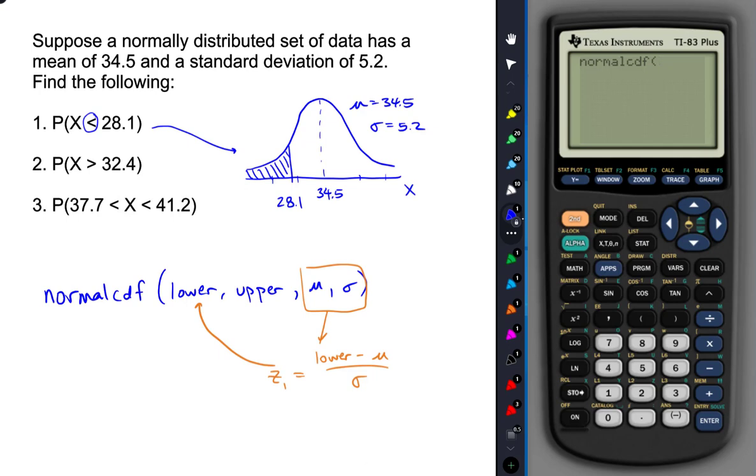So this right here tells me that my shaded region that I want the area of begins at negative infinity and goes up to 28.1. So those would be two inputs.